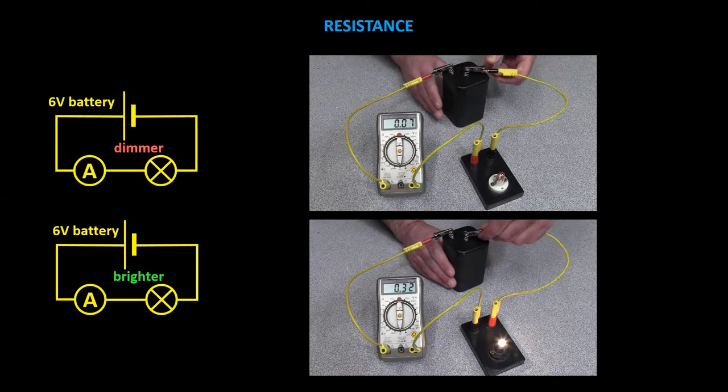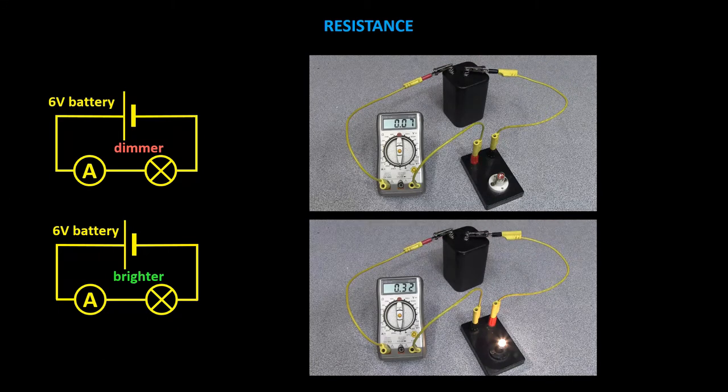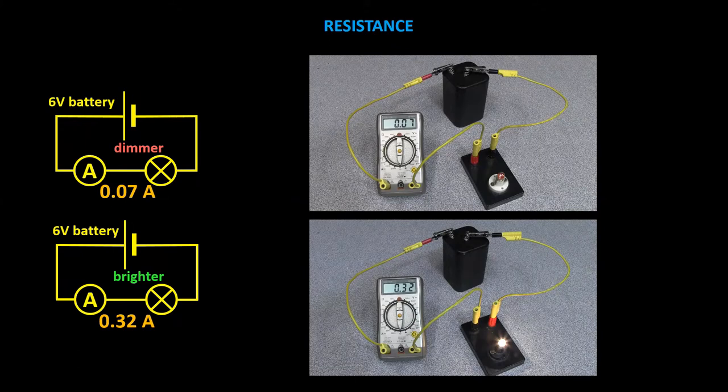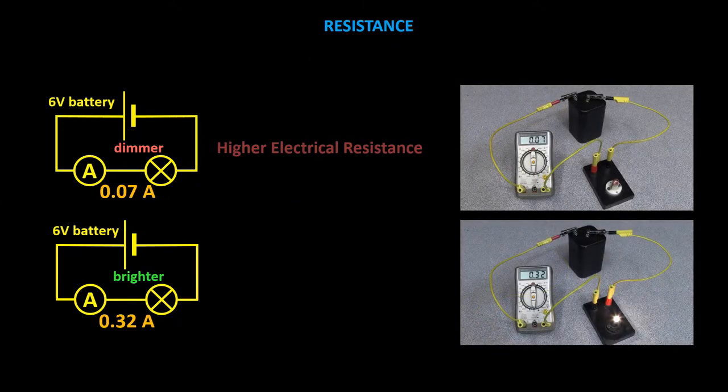I can add a multimeter in ammeter mode and see that the brighter one is drawing a current of 0.32 amps while the dimmer one is drawing a current of only 0.07 amps. The dimmer one resists the flow of current more than the brighter one and we can say that it has a higher electrical resistance or simply that it has a higher resistance.